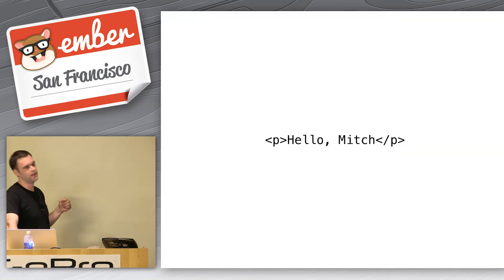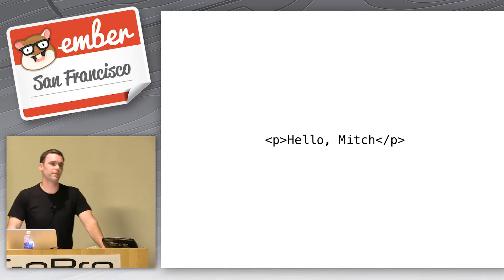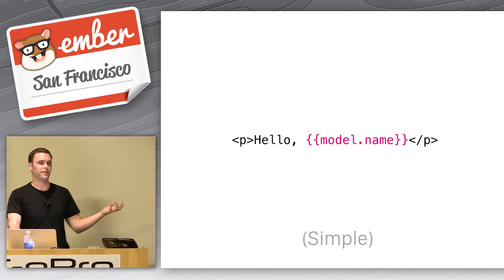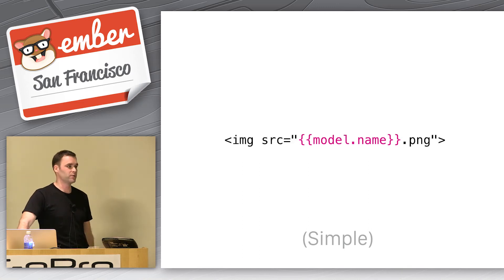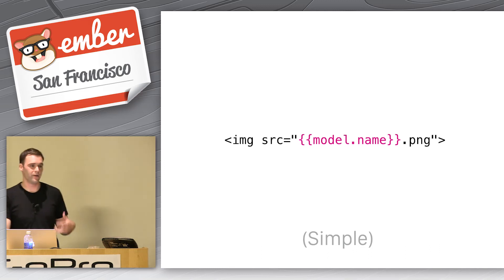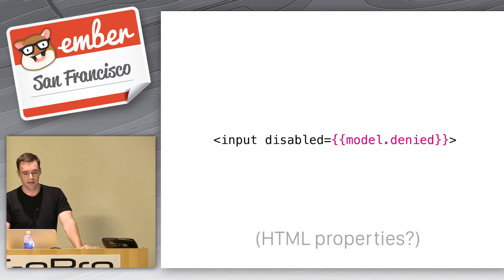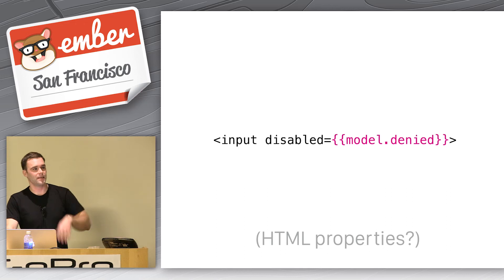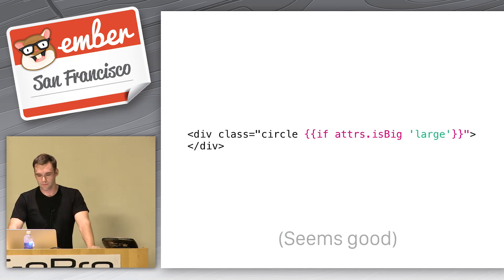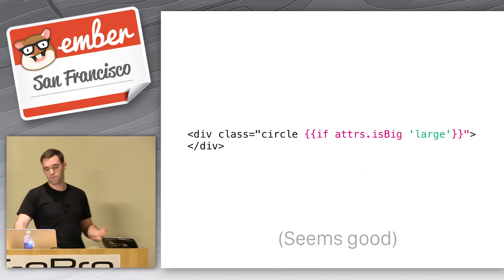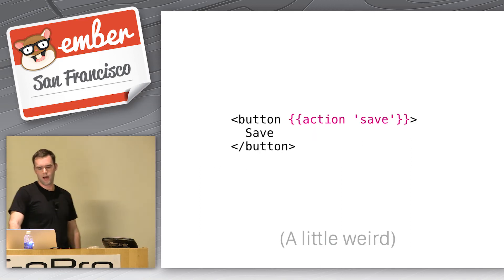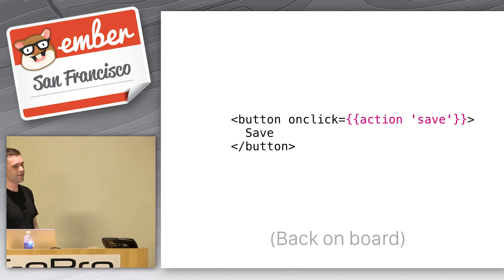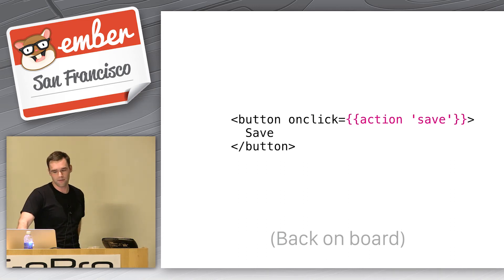Let's get into components and templates — templates first. Templates, people usually have a pretty good time with. It's like string interpolation: say hello Mitch, put something in there with curly brackets, and it just gets put in there. You can now put it into a source attribute — we used to use bind-attr, a different syntax. HTML properties — just say disabled equals, and HTMLBars will figure out what to do: take off disabled if it's false, add disabled if it's there. With action helpers we can now do on-click inline.